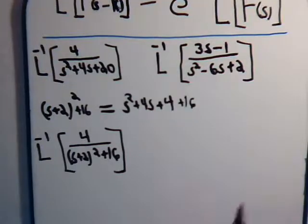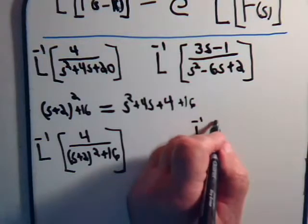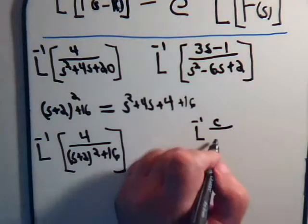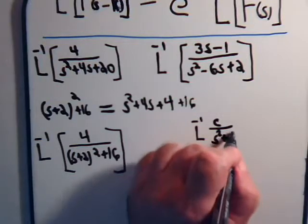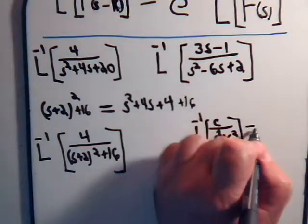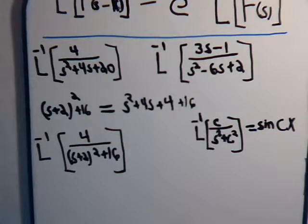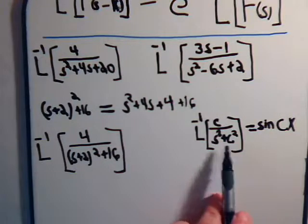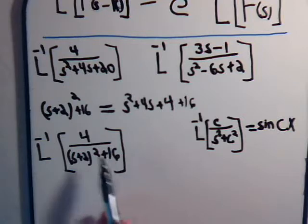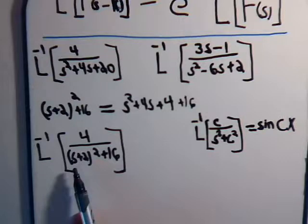Remember now that the inverse Laplace transform of some constant divided by s squared plus that constant squared equals the sine of c times x. That's what we have here — we've got a constant squared and here we have s squared, and there's a square root. The problem is it's not s; it's s plus 2 that's being squared. So it sort of resembles this, but not quite.